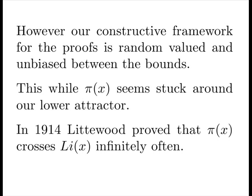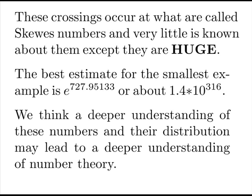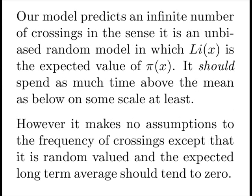In 1914, Littlewood proved that pi of x crosses the log integral infinitely often. These crossings occur at what are called skews numbers and very little is known about them except they are huge. The best estimate for the smallest example is about 10 to the 316. We think a deeper understanding of these numbers and their distribution may lead to a deeper understanding of number theory. Our model predicts an infinite number of crossings in the sense that it is an unbiased random model in which the log integral is the expected value of pi of x. It should spend as much time above the mean as below on some scale at least. However, it makes no assumptions to the frequency of crossings except that as random-valued and expected long-term average should tend to zero.